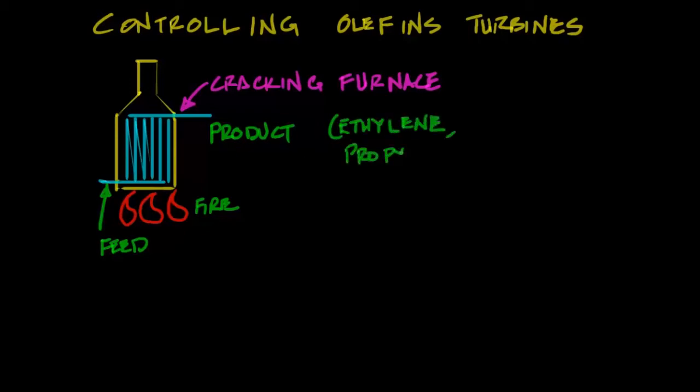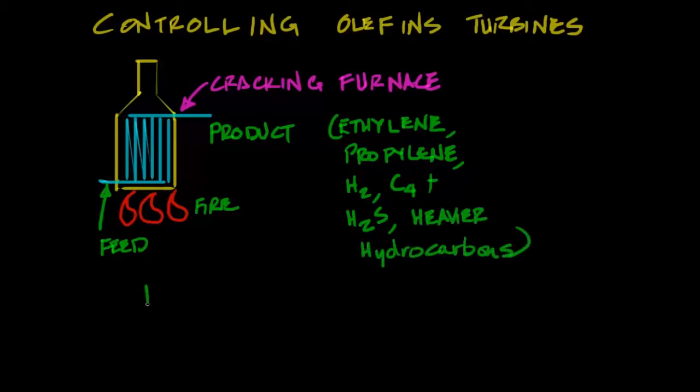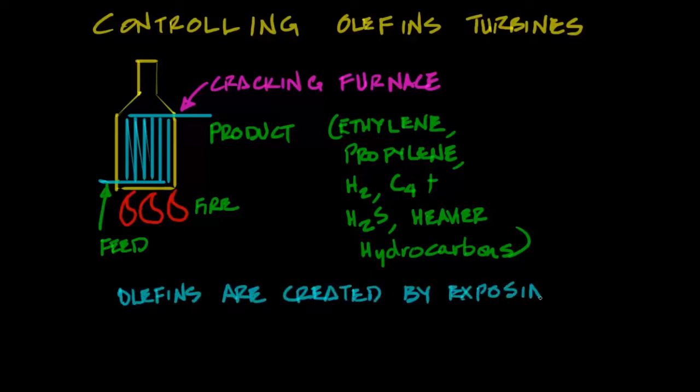The product that comes out of the furnace after it's cracked is olefins like ethylene, propylene, butadiene and then some leftover stuff like hydrogen from what's cracked off of the paraffins, some H2S, heavier stuff. So olefins are created by exposing the feed to very high temperatures.